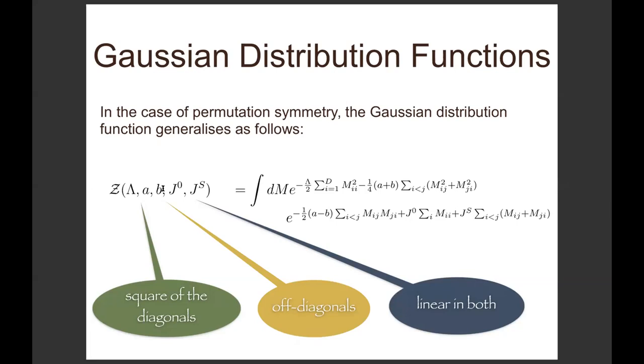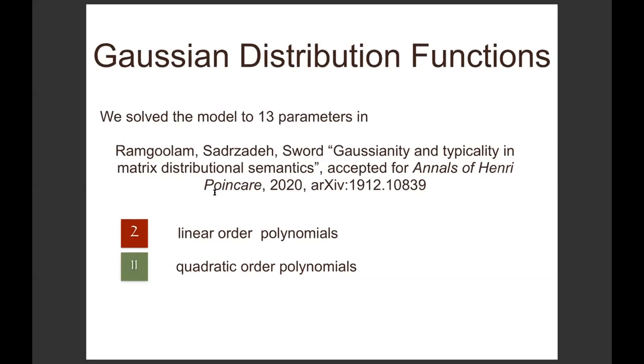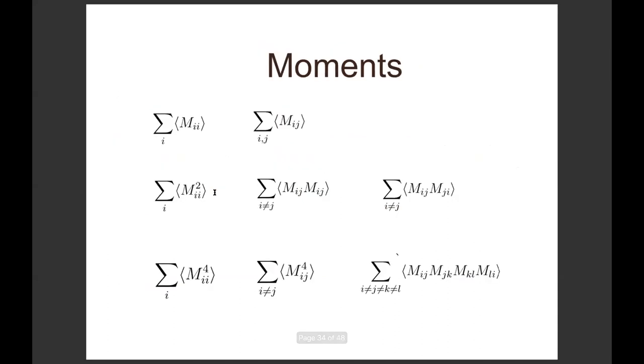There are two linear polynomials and 11 quadratic polynomials. In our previous paper in 2019, published in Annals of Institute Henri Poincaré, we solved the model for two linear polynomials and three quadratic polynomials. In our most recent paper, again accepted for publication in Annals of Henri Poincaré, Sanjay solved it for all of the quadratic polynomials, all 11 of them.